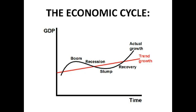We have trend growth and actual growth. Two things you really ought to define well are recession and boom. Recession is when the economy is growing at less than the long-term rate of growth. A very specific definition for multiple choice is when GDP is falling in two successive quarters. If GDP is falling, output is falling, fewer people are needed, leading to unemployment, a negative multiplier effect, and a significant reduction in economic competitiveness.